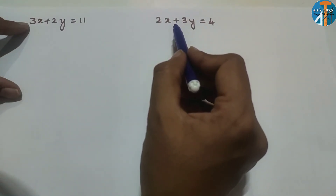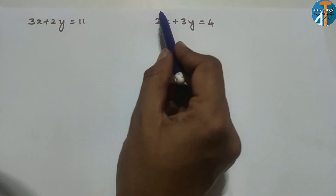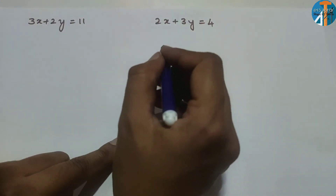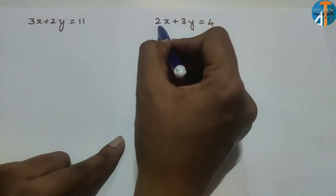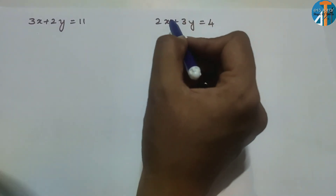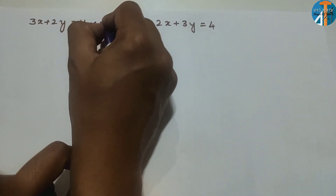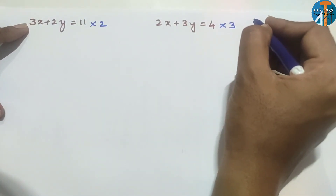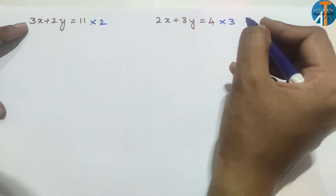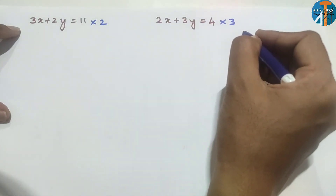Now the third problem: 3x + 2y = 11, 2x + 3y = 12. Check if x or y coefficients are the same — they are not. To make x coefficients the same, find the LCM of 3 and 2, which is 6. So multiply the first equation by 2 to get 6x, and multiply the second equation by 3 to get 6x.